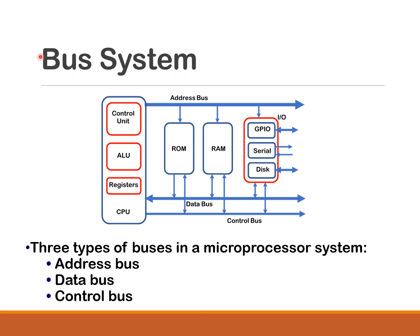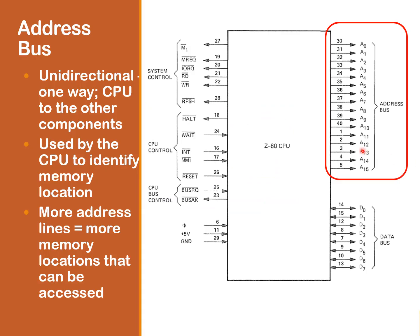Next, let's talk about the bus system. As mentioned, there are three buses: the address bus, data bus, and control bus. The address bus is unidirectional, meaning signals travel one way — from the CPU to the other components in the system. The address bus is used to identify the memory location in the memory system. If you have more address lines, that means more memory locations can be accessed.